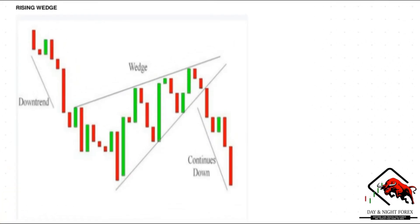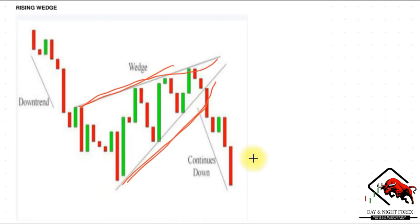This brings us to another pattern we're going to look at, which is the rising wedge. The rising wedge is a downtrend continuation pattern. It is basically formed when price consolidates between upward sloping support and resistance lines — that is where it is essentially formed.